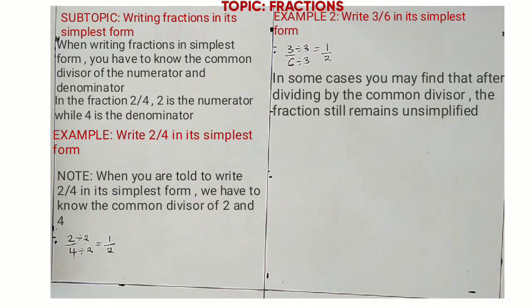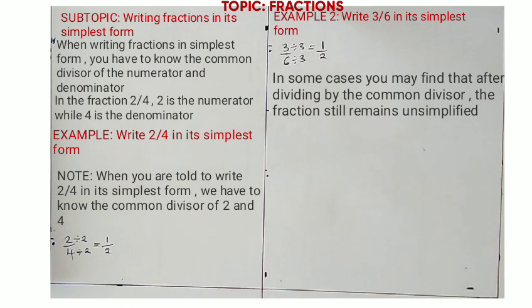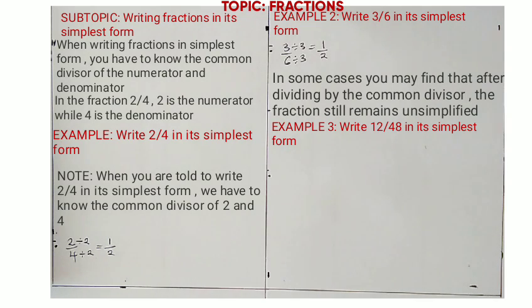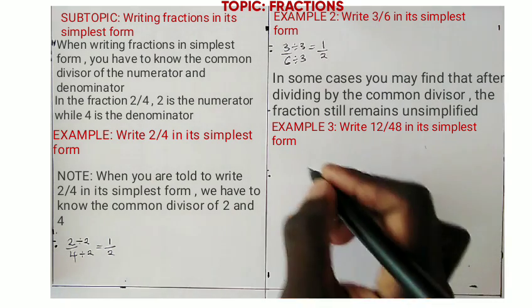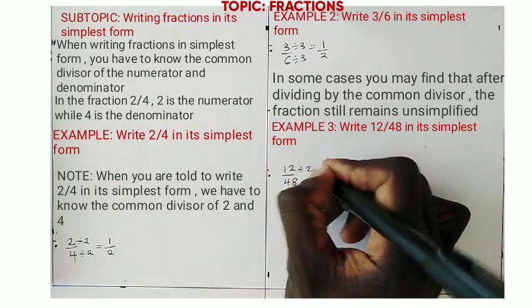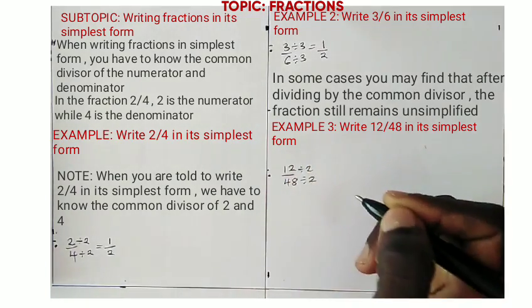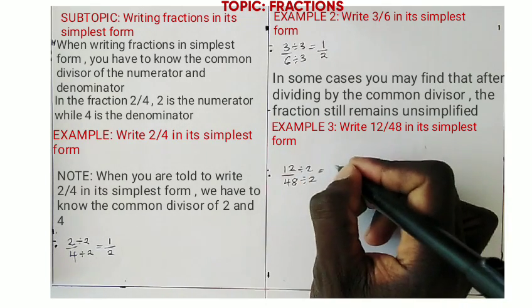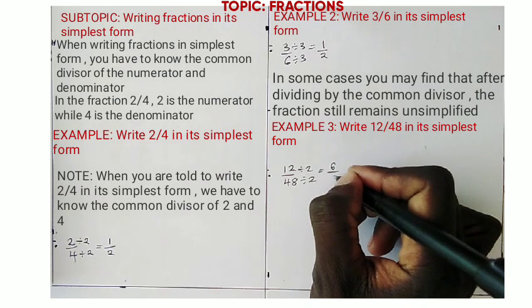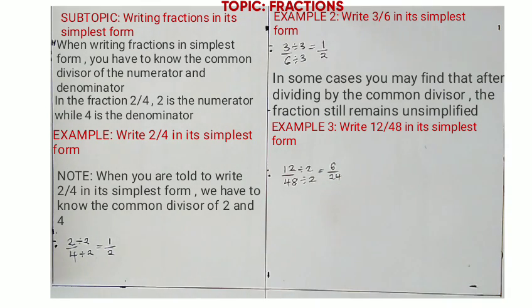In some other cases, you may find that after dividing by the common divisor, the fraction still remains unsimplified. For example, in 12/48, if we take 12/48 and divide by 2, we shall find that 12 divided by 2 equals 6 and 48 divided by 2 equals 24.